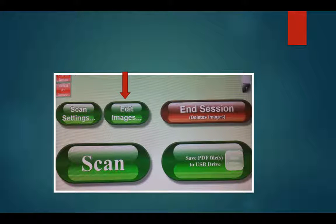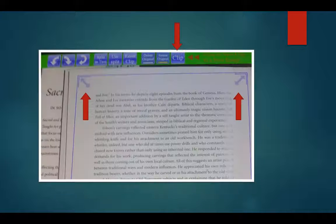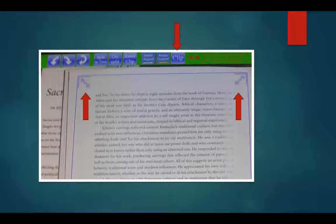Next, select Edit Images. Pages must be cropped and clipped to be read by the ACE Green Reader. Once the blue arrows are within the parameters of the document, select Clip. Do this for each document.